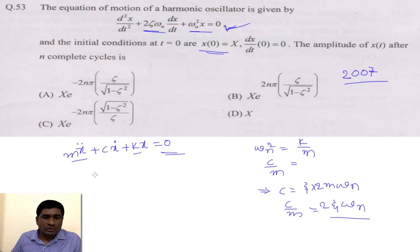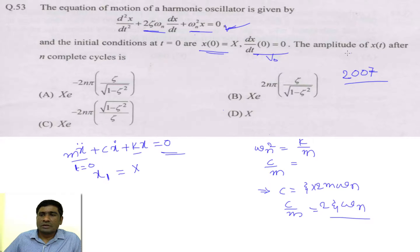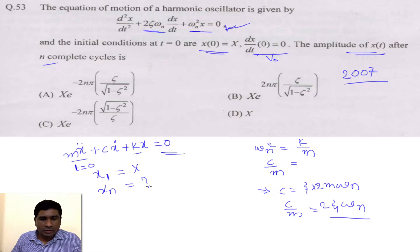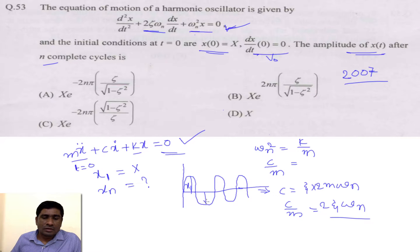The displacement or amplitude at t = 0 is given as capital X (x₁), and initial velocity is zero. We need to find the amplitude xn after n complete cycles. In damped vibration, the amplitude decreases over time due to damping. Here x₁, x₂, and so on represent successive amplitudes, reducing until xn after n revolutions.